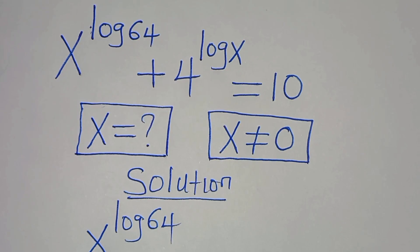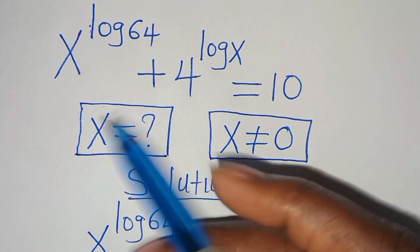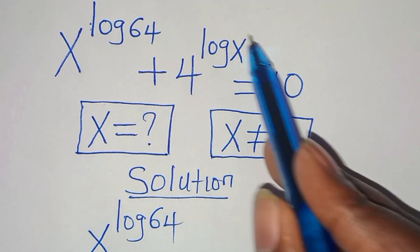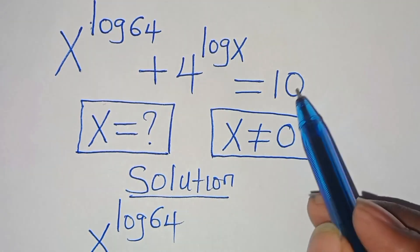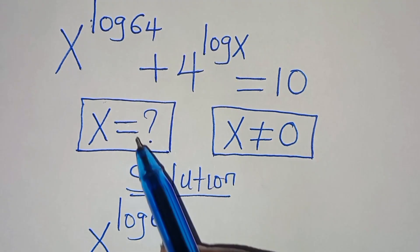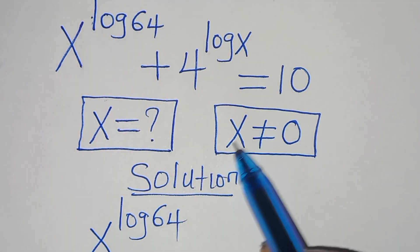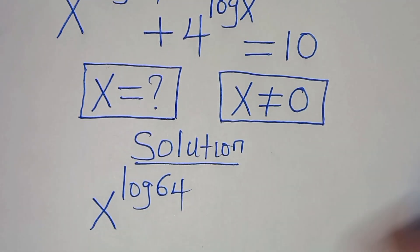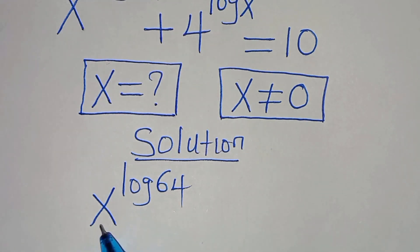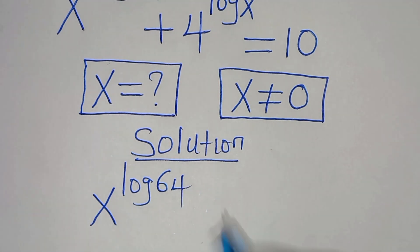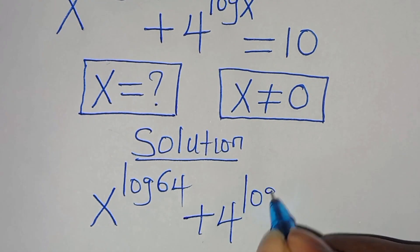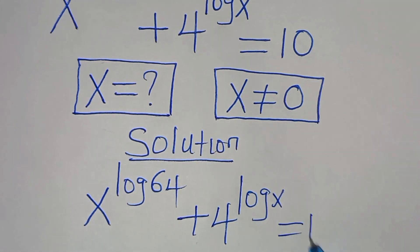Hello everyone, you are welcome to solve this nice logarithm math problem: x to the power of log 64, plus 4 to the power of log x, is equal to 10. What is the value of x, given that x is not equal to zero?